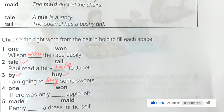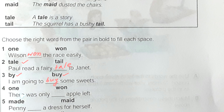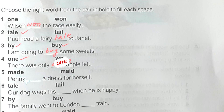Number four: there was only dash apple left. We cannot write 'won' here because 'won' means to win something. Here 'one' is the number, and we understand one apple is left, so the answer will be 'one.'